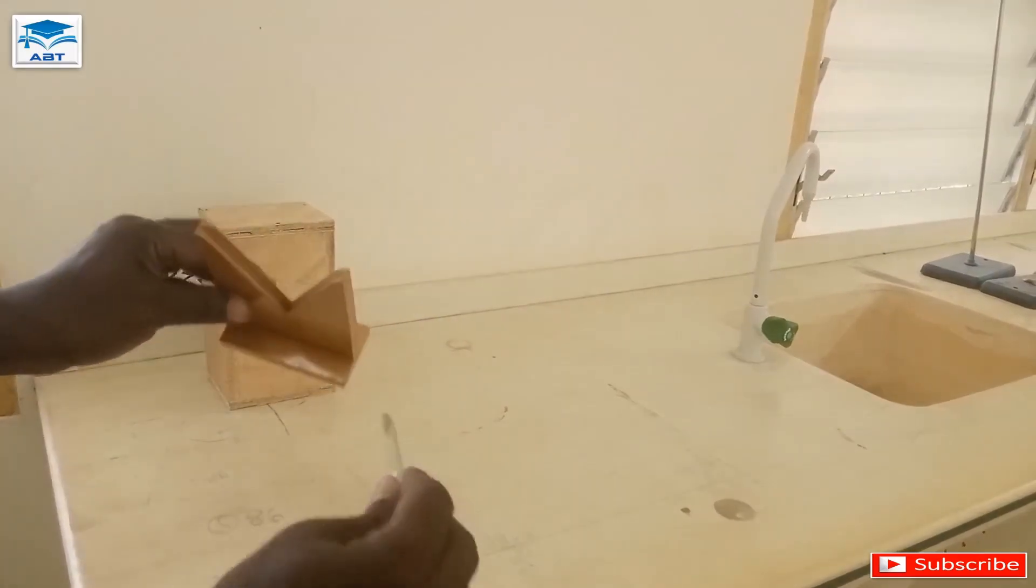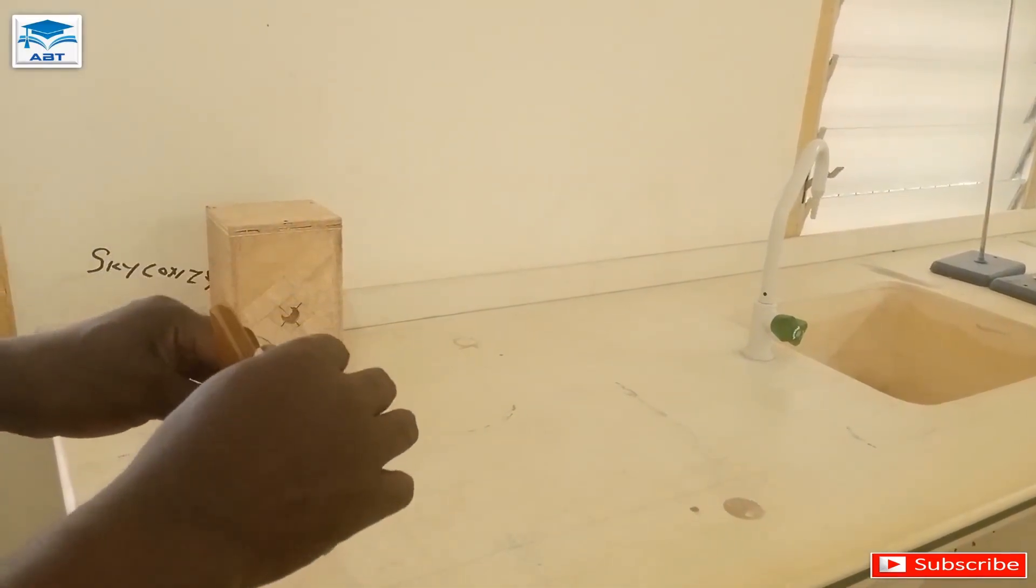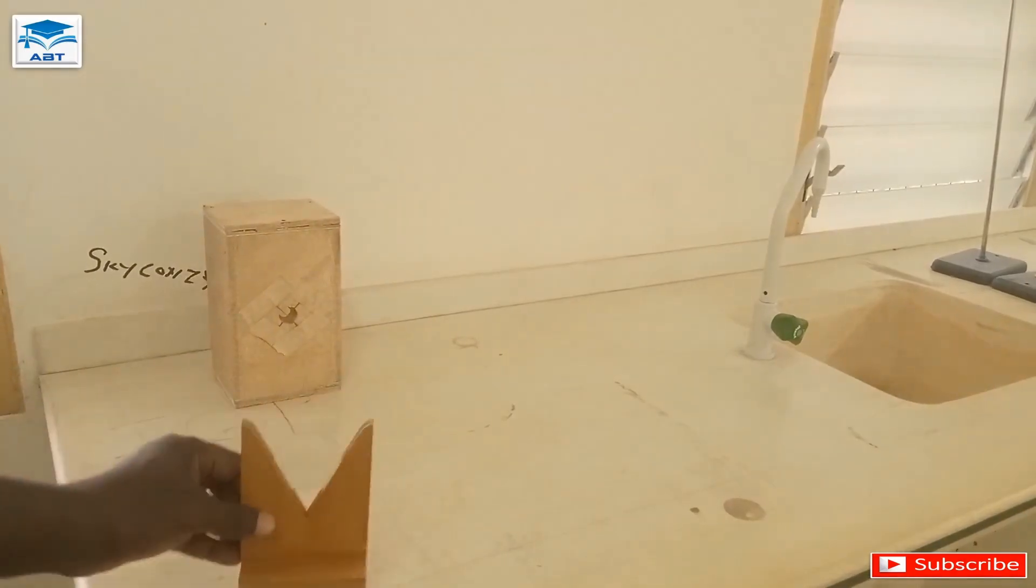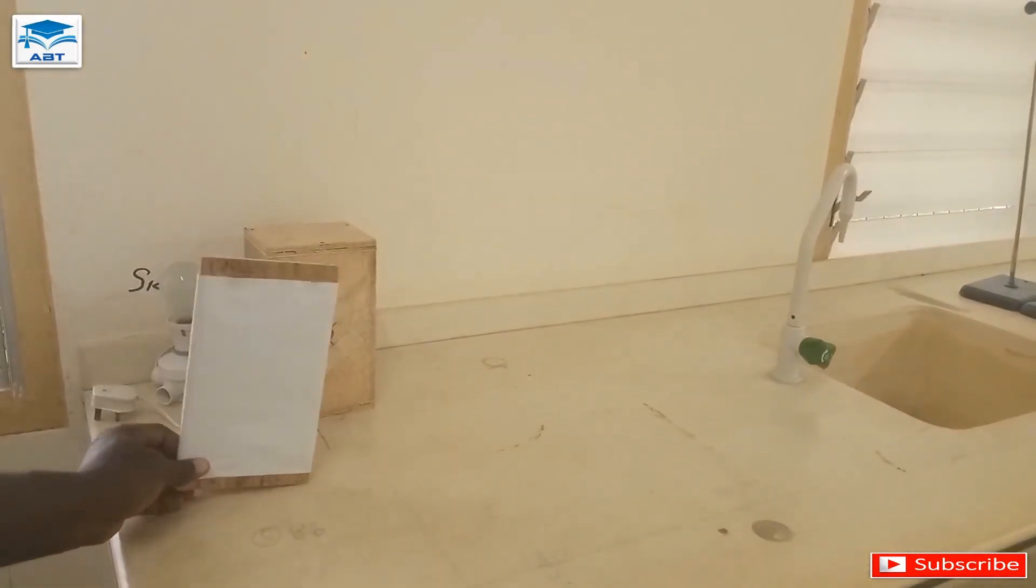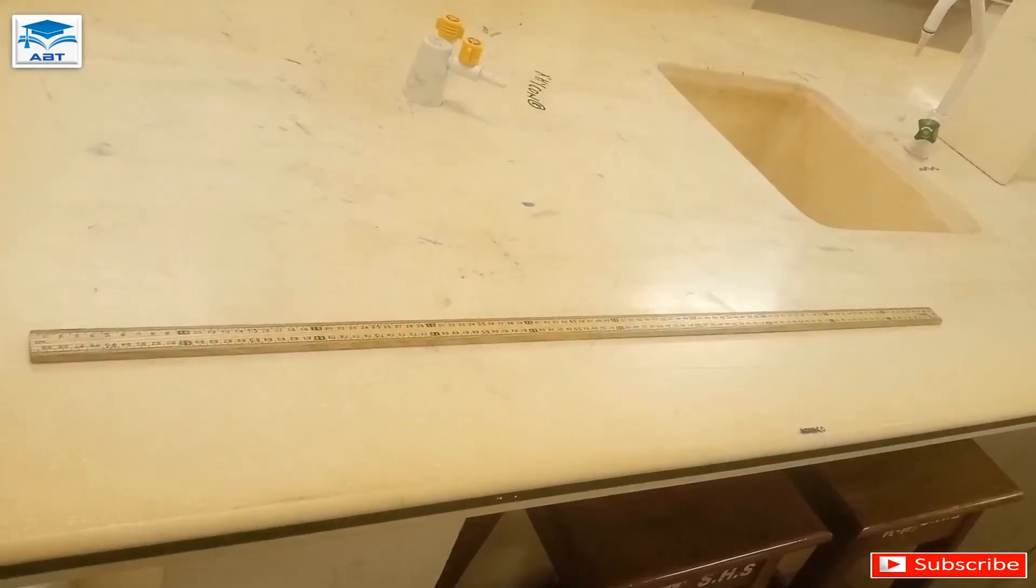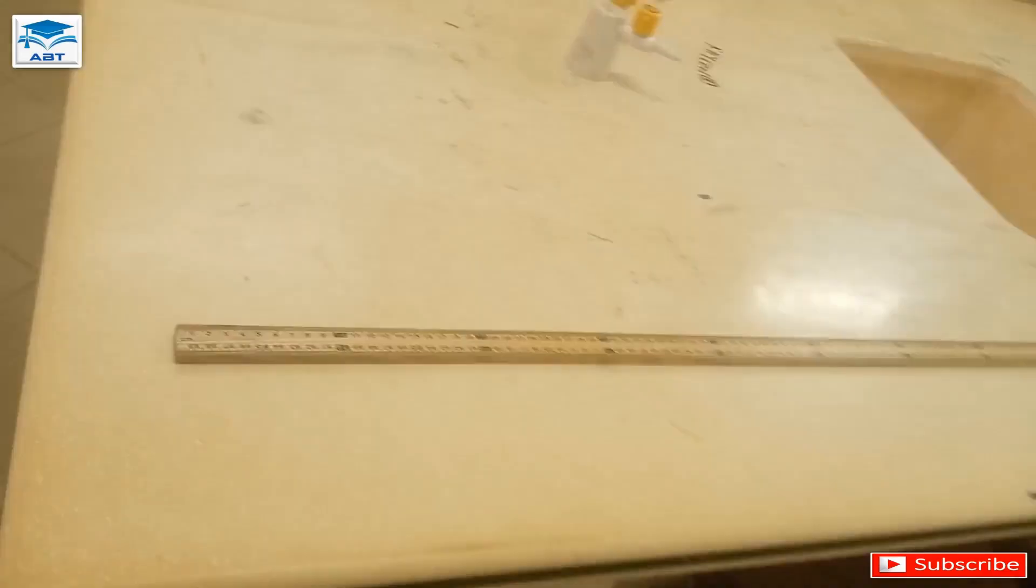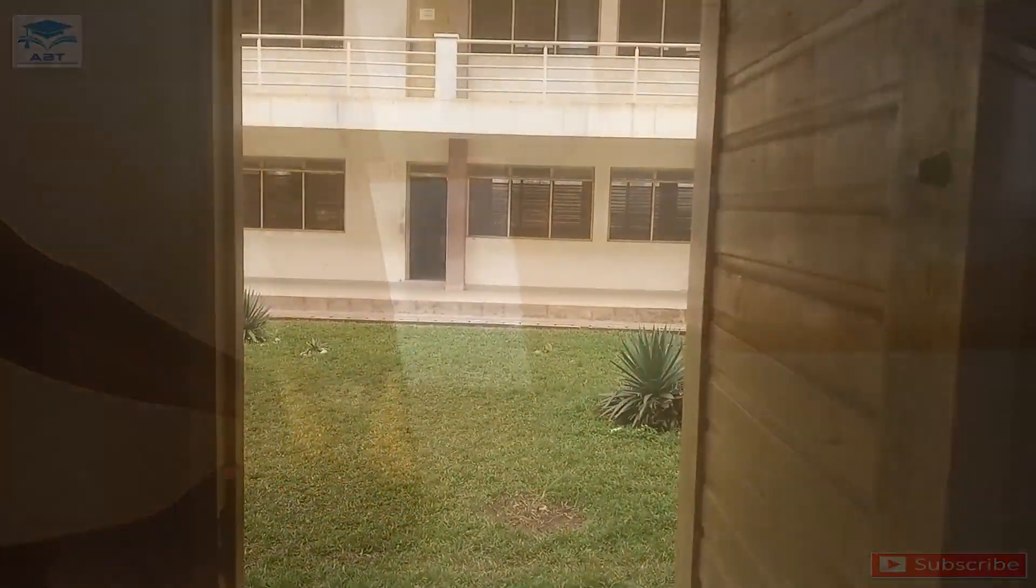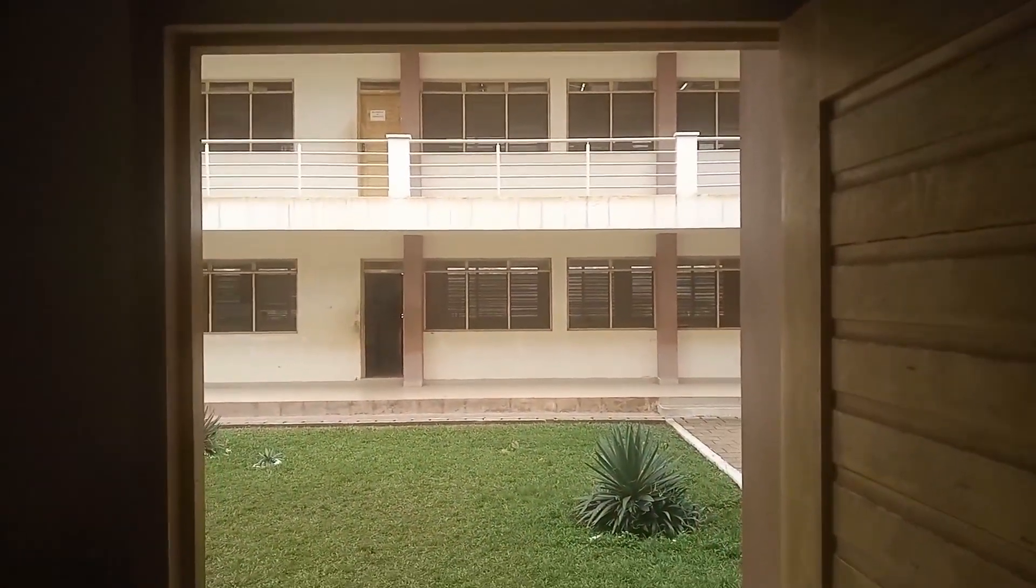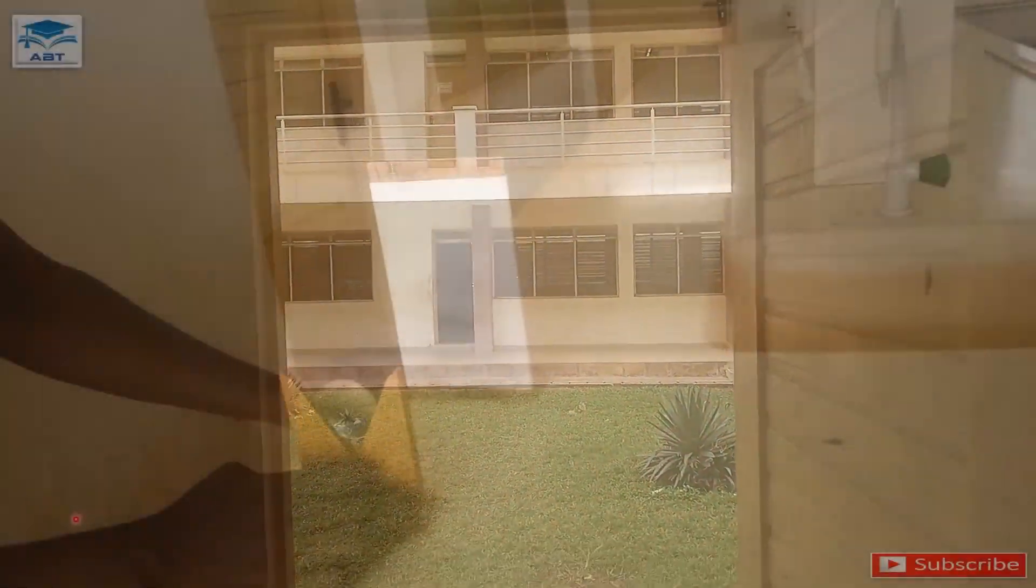So we have the screen here and the converging lens and its holder here, and we have this building at this side of the lens.